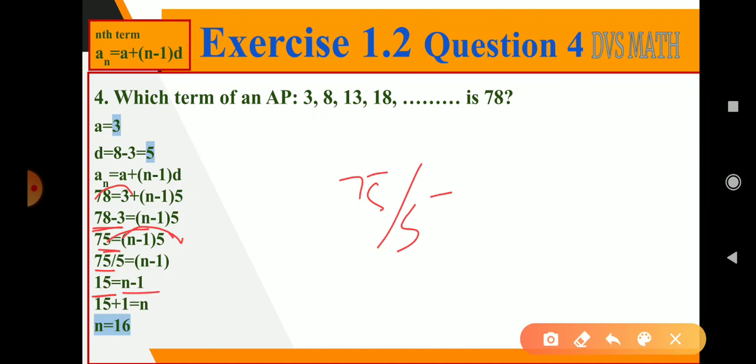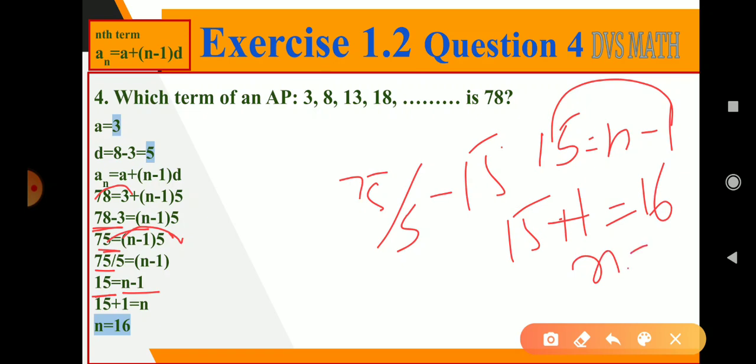So n minus 1 remains. So if we take minus here, we got 15. So 15 is equal to n minus 1. To take minus 1 to this side, minus 1 becomes plus 1. 15 plus 1, we got 16. So n value is equal to 16.